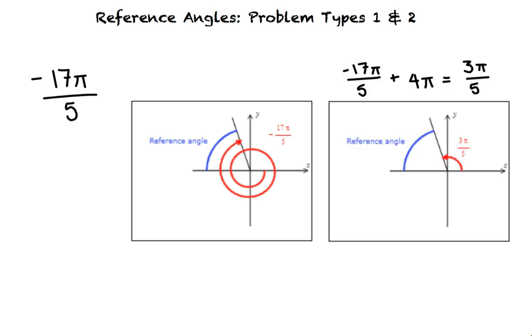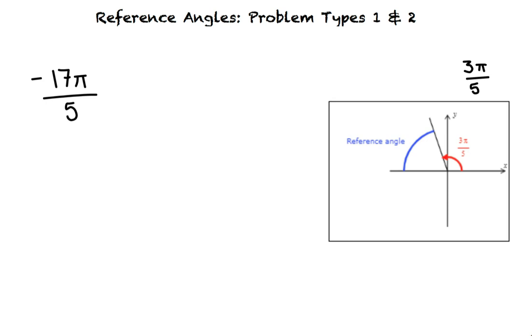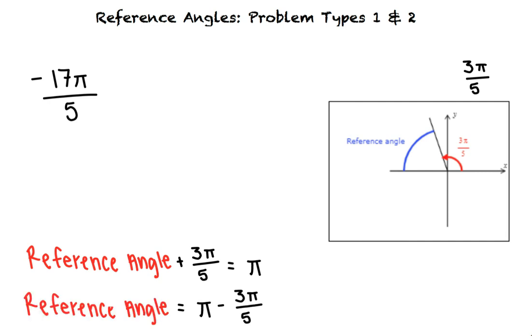This means that if we find the reference angle for 3π over 5, we are also finding the reference angle for negative 17π over 5. We know that the reference angle and 3π over 5 must add up to π. This means that the reference angle equals π minus 3π over 5. Solving for the reference angle, we see that it is equal to 2π over 5.